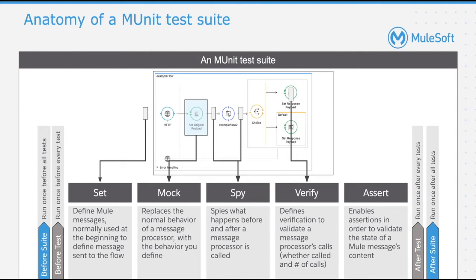Before Suite, After Suite, Before Test, and After Test are the scopes which can be run before all the test cases or an individual test case. Therefore, if you want to run any logic before executing all the test cases or individual tests, you could use these scopes. Set, Mock, Verify, Spy, and Assert are some of the event processors used while building the test cases.